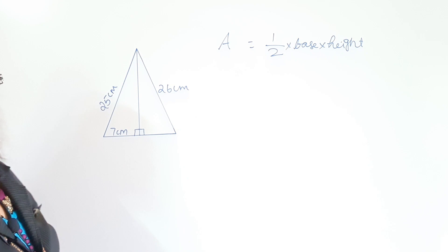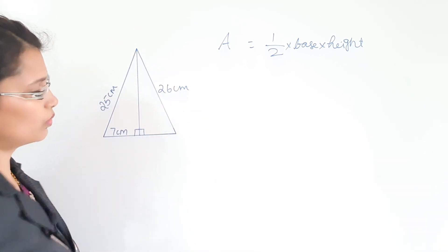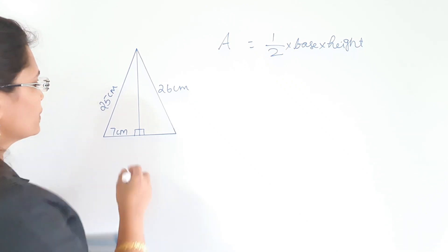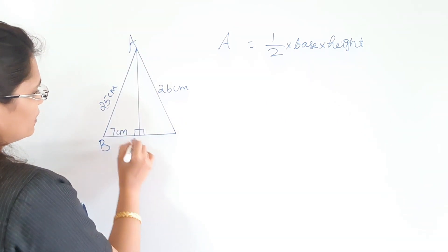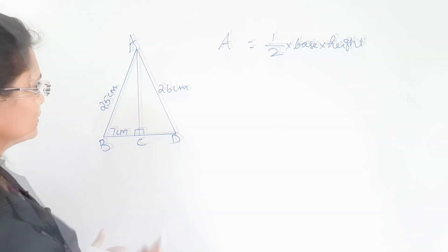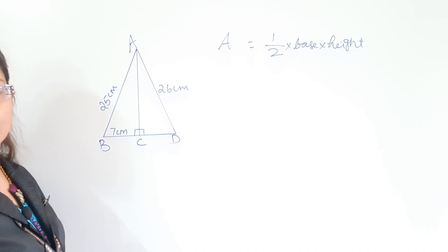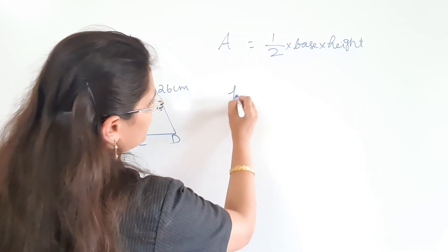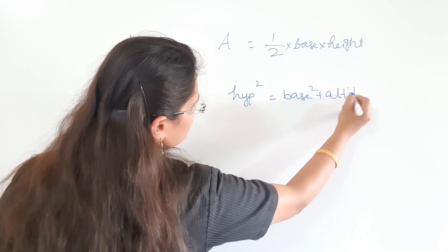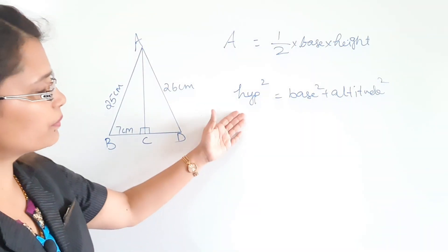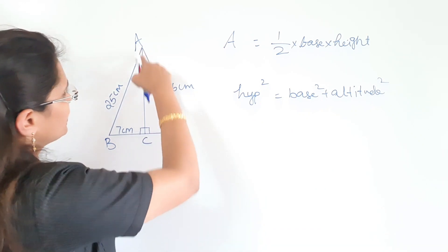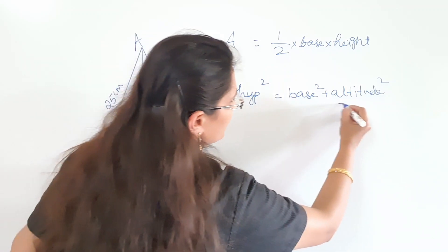We have to find the area of the whole triangle. First, we need to find the height. Consider points A, B, C, D. First find the length AC. You already learned Pythagoras formula: hypotenuse square equals base square plus altitude square. We have to find AC, which is the altitude here. Taking the formula and rearranging: AC square equals hypotenuse square minus base square.